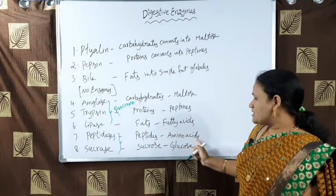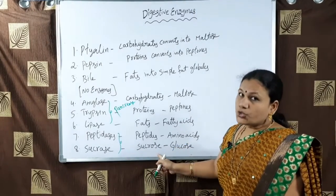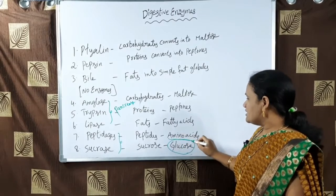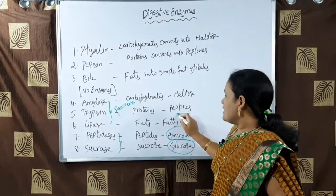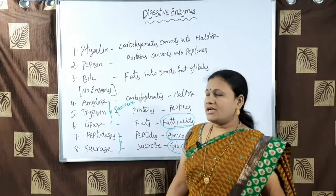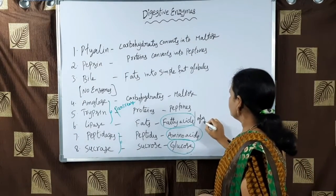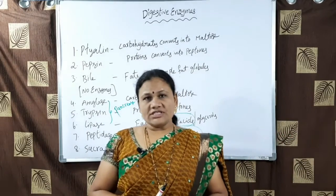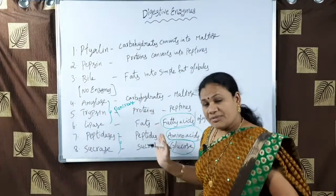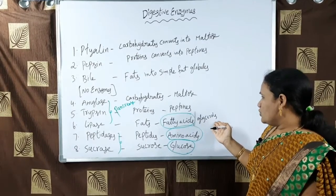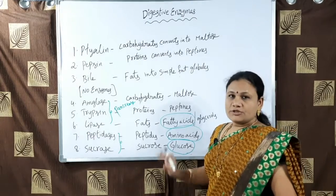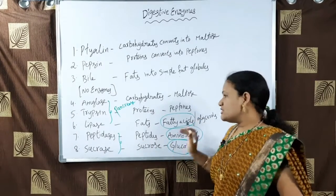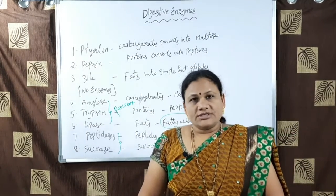From the walls of the small intestine: peptidases act on peptides and convert them into amino acids, and sucrase acts on sucrose and converts it into glucose. Finally, glucose is the simplest form of carbohydrates, amino acids are the simplest form of proteins, and fatty acids and glycerol are the simplest forms of fats. After digestion is complete, these simplest forms are absorbed by the finger-like projections called villi in the small intestine and released into the blood, which transports them to every part of the body.